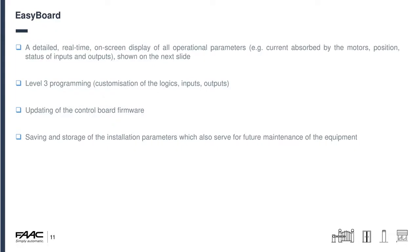EasyBoard gives you a detailed real-time on-screen display of all the operation parameters, as well as all the states of the inputs and outputs on the board. You also get full level-three programming where you can customise inputs and outputs, update the control board firmware, and save and store all installation parameters. If you do lots of installs with a particular input/output orientation, you can essentially set that up from a desk-bound control board in the office, save that configuration, go to site and just download it — then you only need to adjust the forces accordingly to suit that particular gate system.